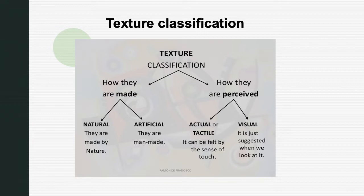This is the flowchart of texture classification — how they are made: natural and artificial. Artificial texture is included in this type. How they are perceived: actual or tactile, and visual texture.